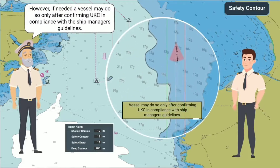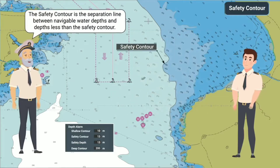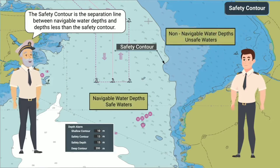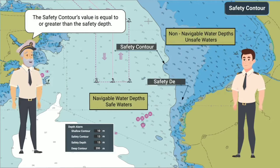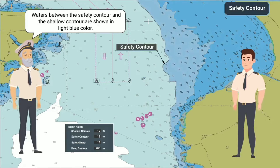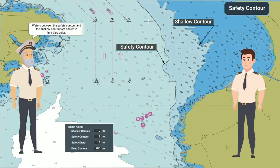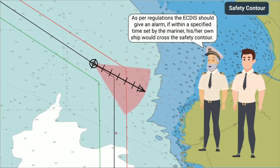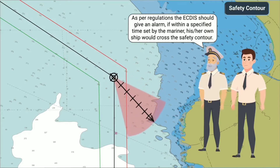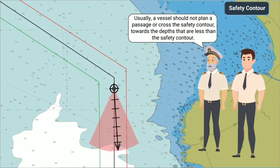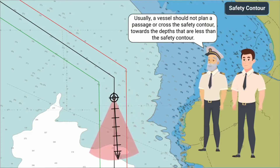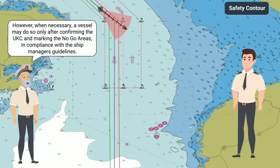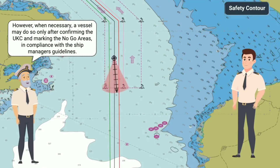However, if needed, a vessel may do so only after confirming UKC in compliance with the ship manager's guidelines. The safety contour is the separation line between navigable water depths and depths less than the safety contour. The safety contour's value is equal to or greater than the safety depth. Waters between the safety contour and the shallow contour are shown in light blue color. As per regulations, the ECDIS should give an alarm if, within a specified time set by the mariner, the own ship would cross the safety contour. Usually a vessel does not plan a passage or cross the safety contour towards depths less than the safety contour. However, when necessary, a vessel may do so only after confirming the UKC and marking the no-go areas in compliance with the ship manager's guidelines.